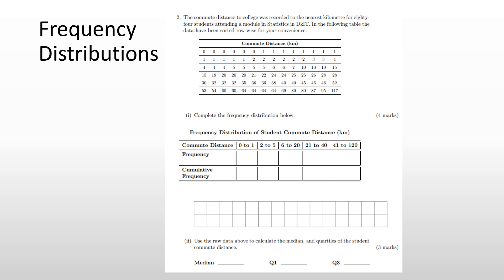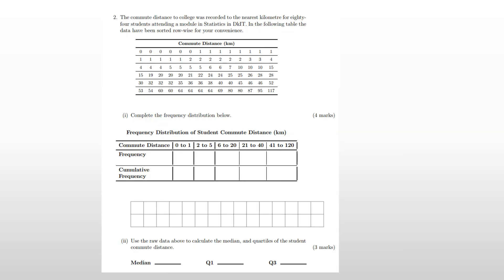Frequency just means count — how many values fall in that range. For the range zero to one, you want to find how many students travel zero to one kilometers to college. Before counting, I like to understand the structure of the table first — there are 14 numbers in each row and six rows total. That way, if everything in a row falls within the same range, I don't have to count; I just know it's 14.